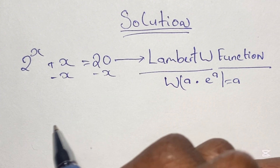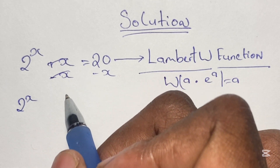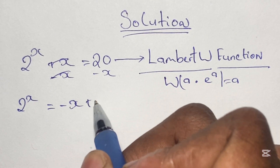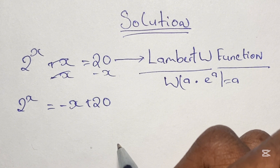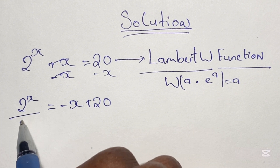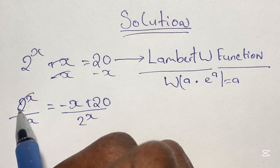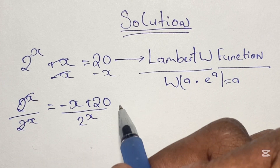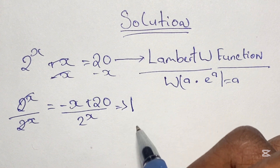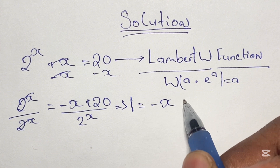We start by subtracting both sides of this equation by x, so this gives us 2 to the power of x is equal to negative x plus 20. Then from here we can divide both sides of this equation by 2 to the power of x. We know that 2 to the power of x over 2 to the power of x gives us 1, so we have 1 is equal to negative x plus 20 over 2 to the power of x.